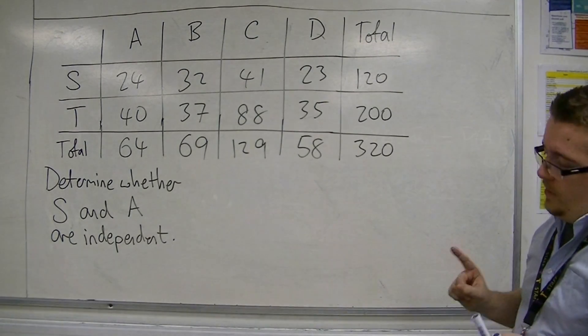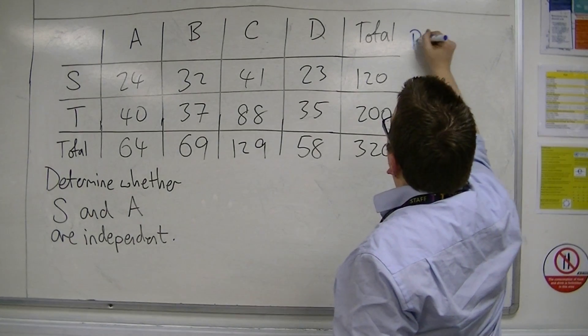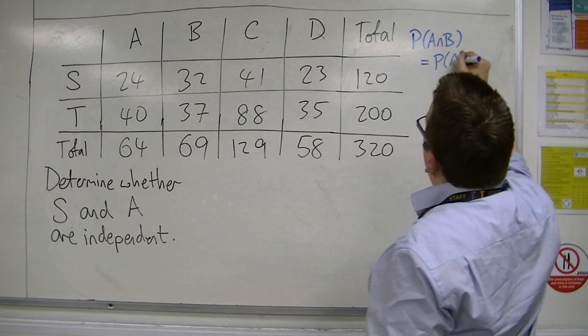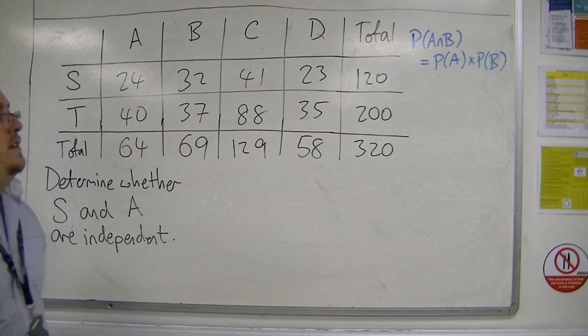Now we know that two events are independent if the probability of A intersection B is the probability of A times the probability of B. If that's true, then they are independent.